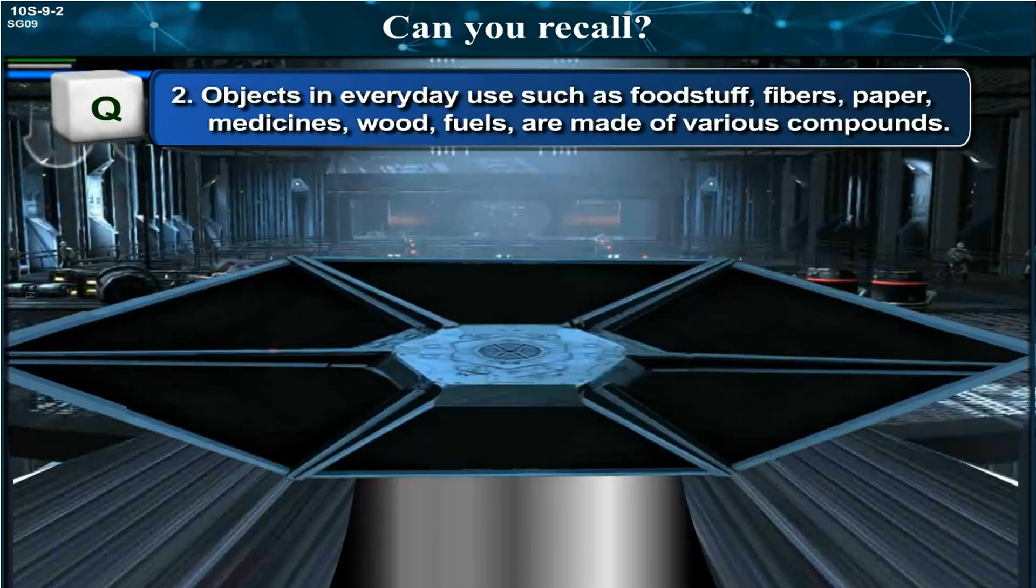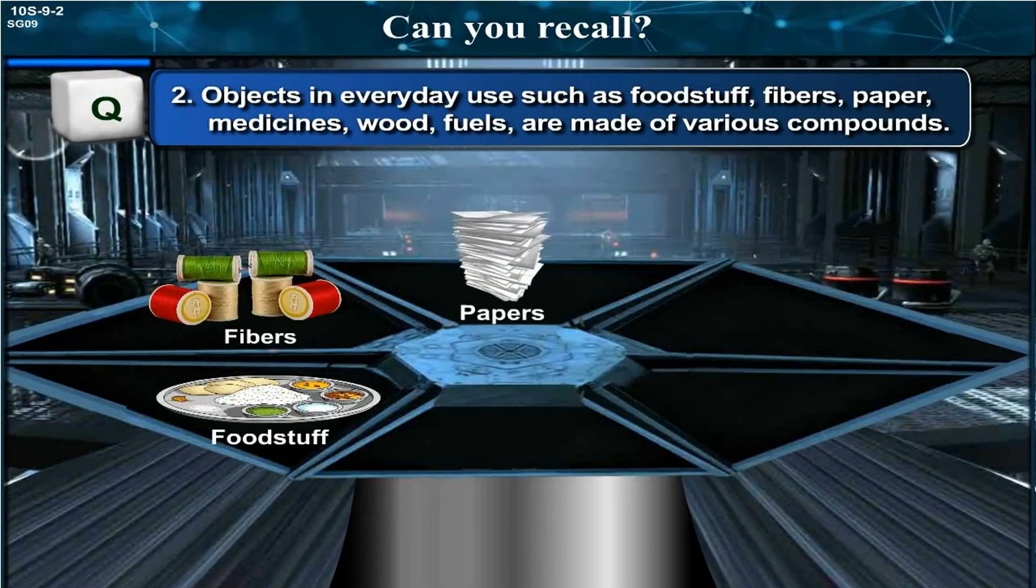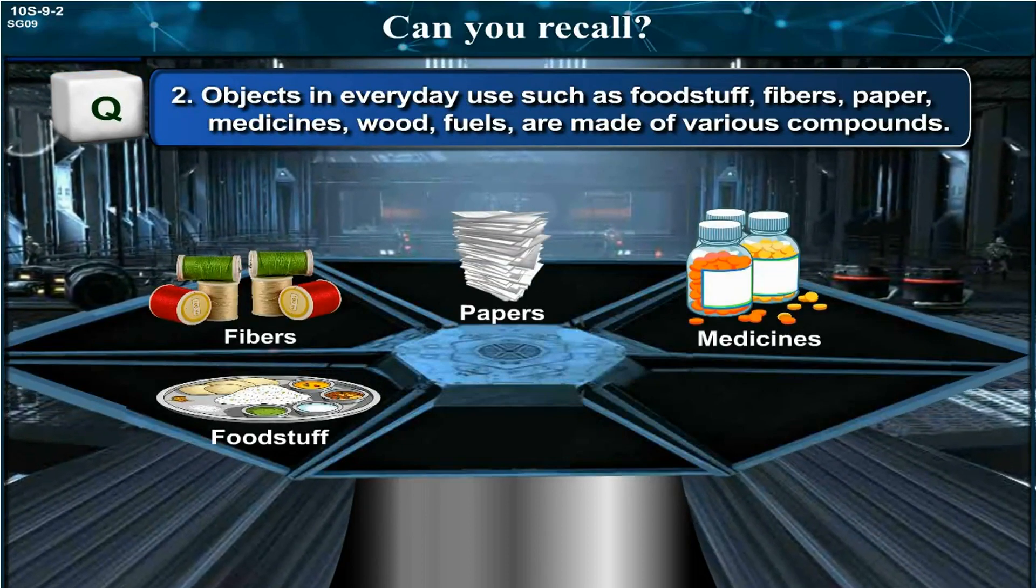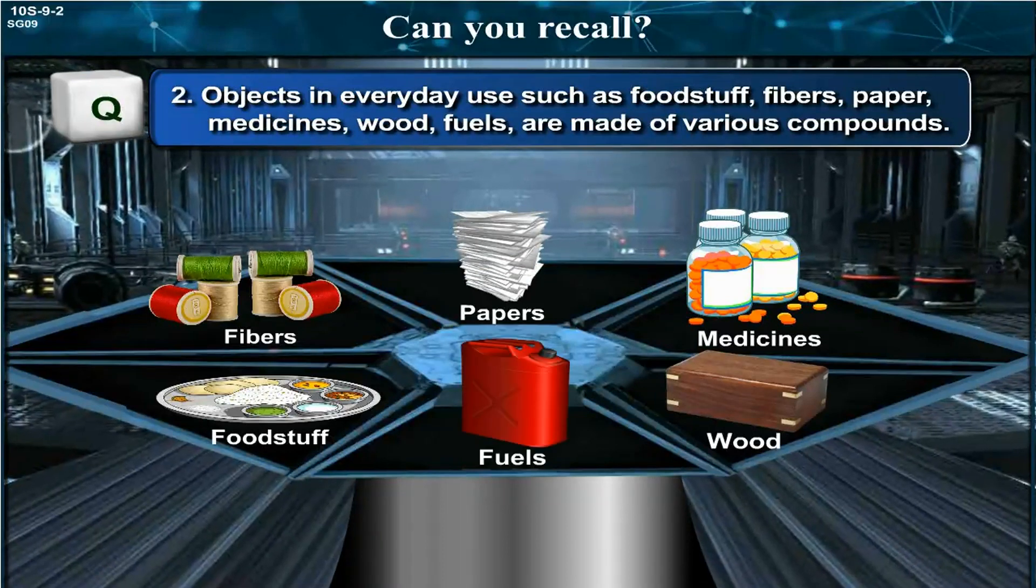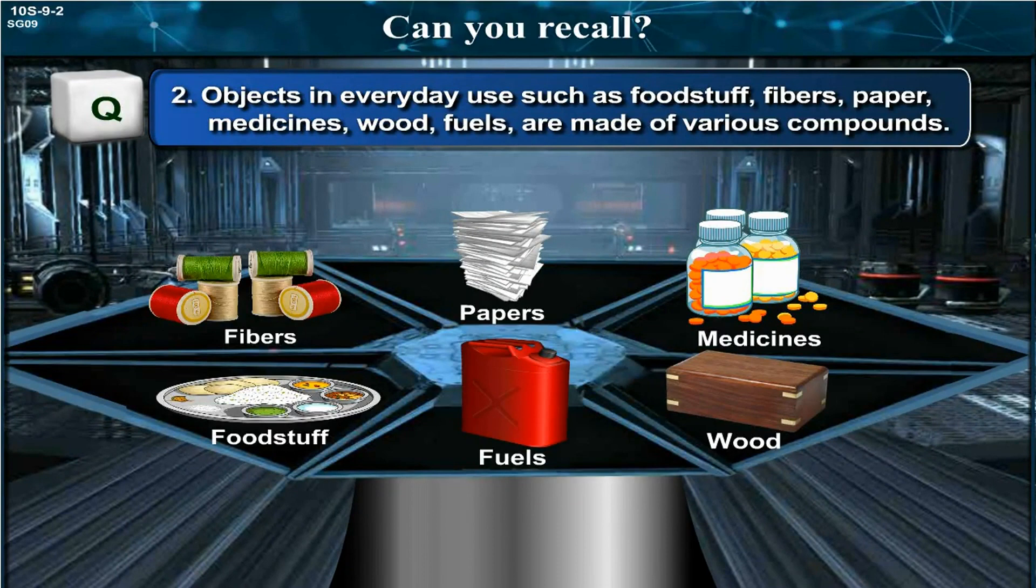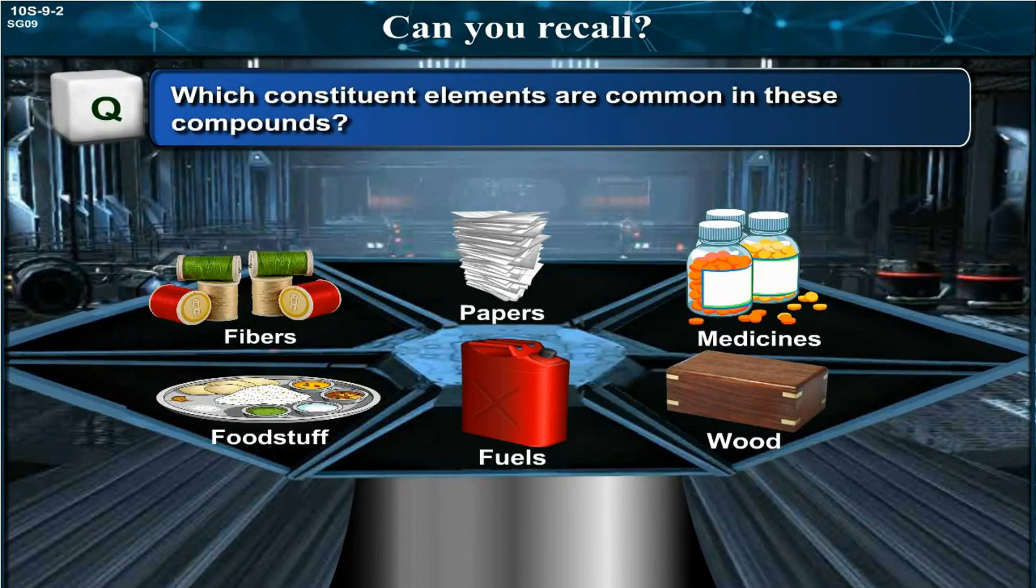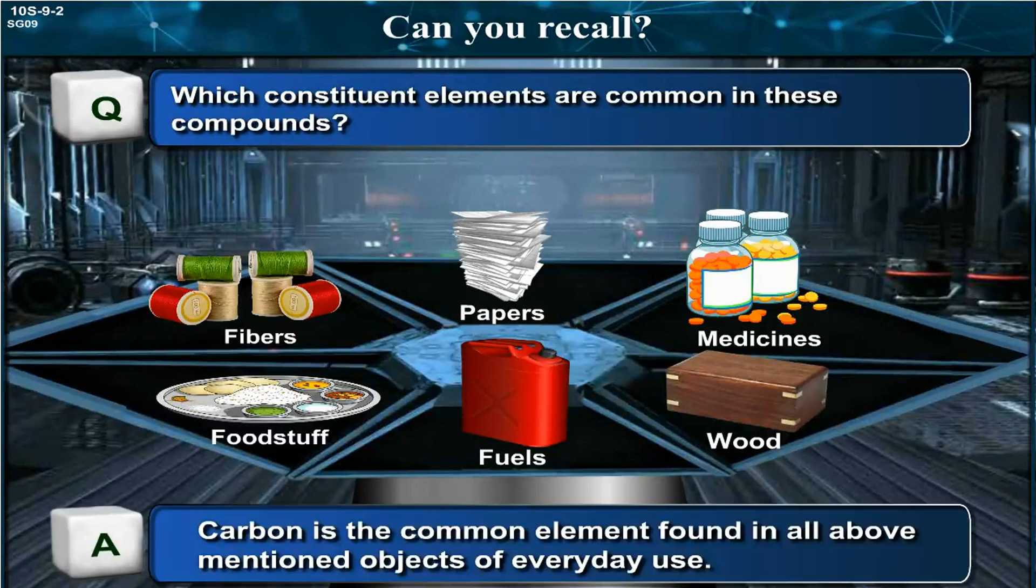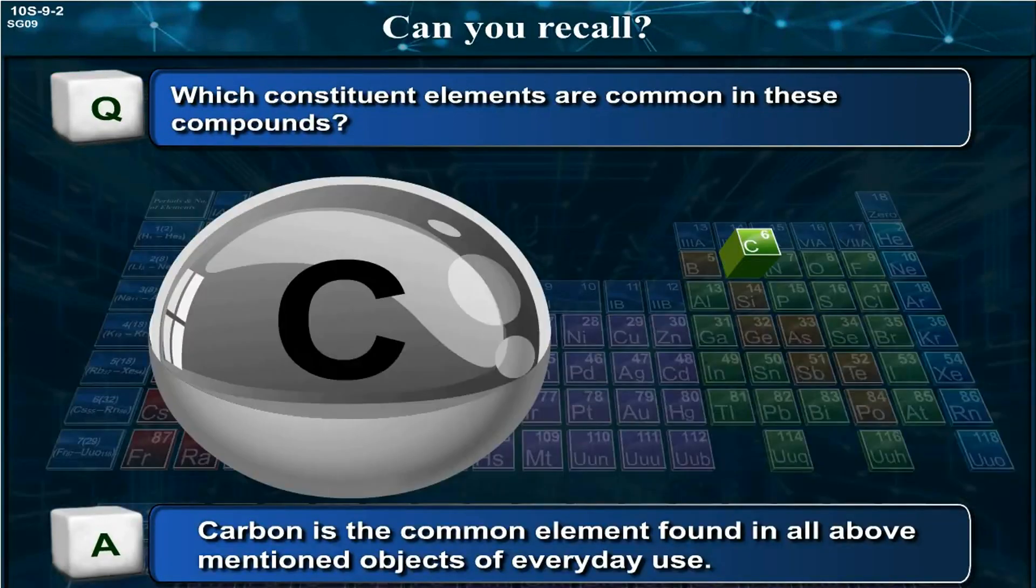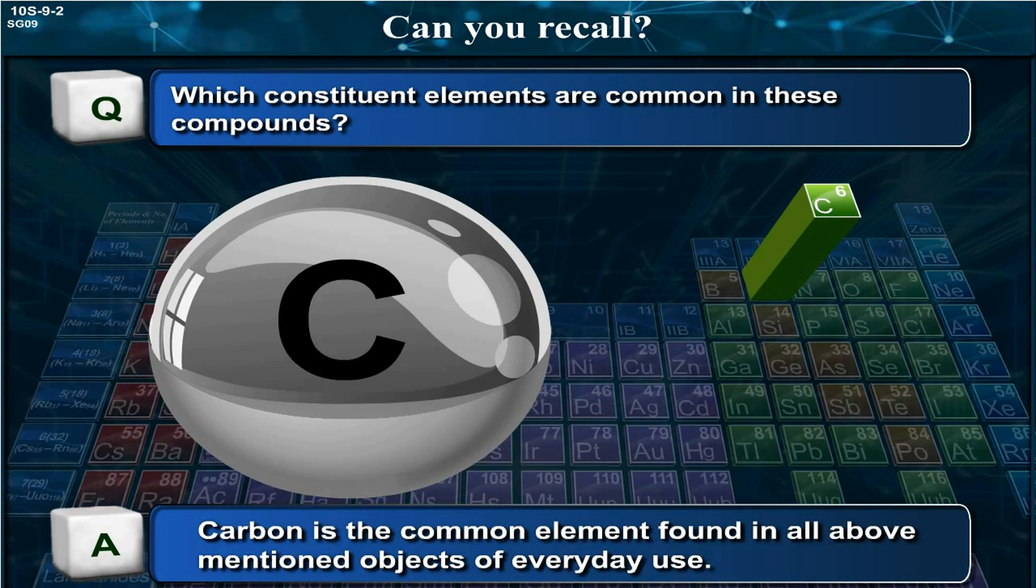Objects in everyday use such as foodstuff, fibers, paper, medicines, wood, and fuels are made up of various compounds. Which constituent elements are common in these compounds? Answer: Carbon is the common element found in all above mentioned objects of everyday use.